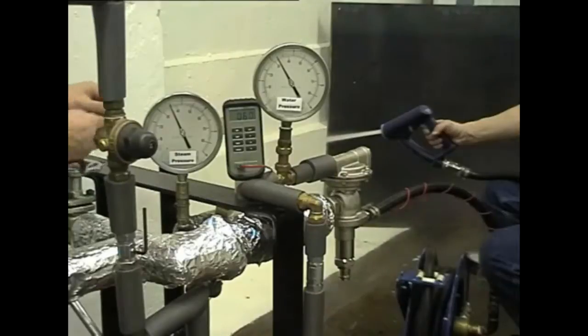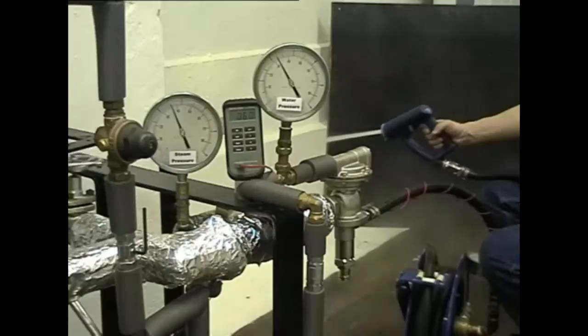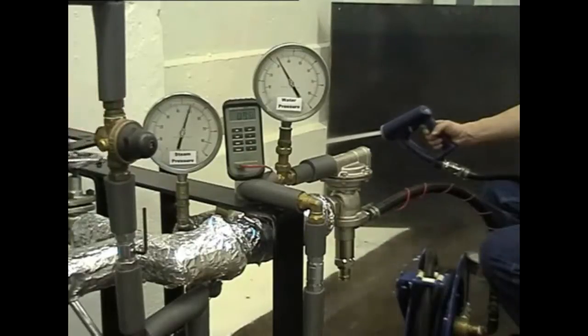Now let's see how the SWM1 reacts under a large increase in steam pressure. Bypassing the steam supply pressure reducing valve allows the steam pressure to be increased to 80 psi.